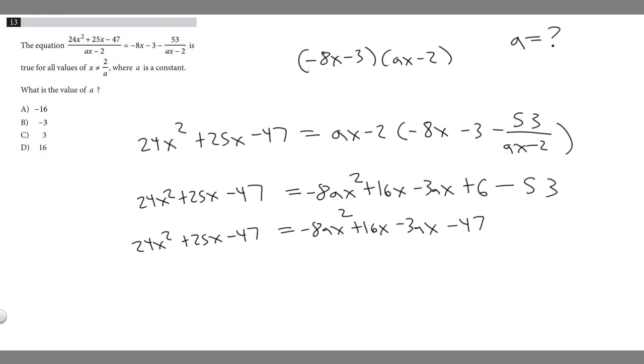So since they're mirrored, 24 is going to have to be equal to minus 8a. So minus 8a is going to have to equal to 24. Because they're both like quadratic equations, right? So the front of our x squared have to be equal.